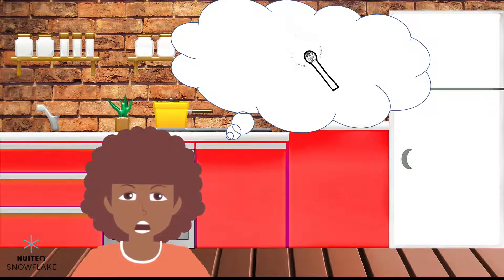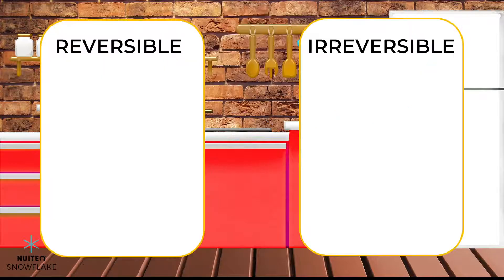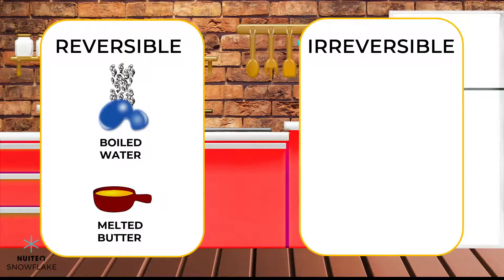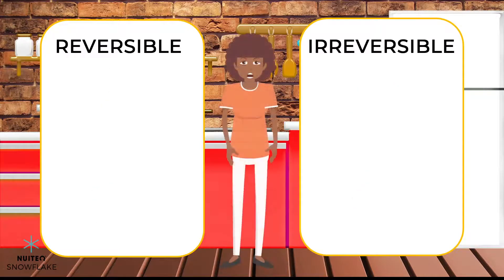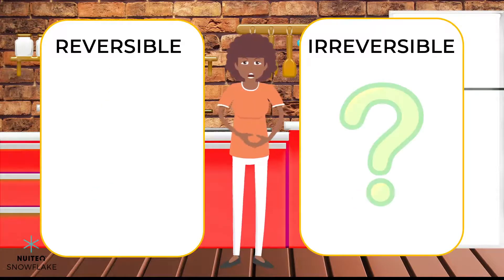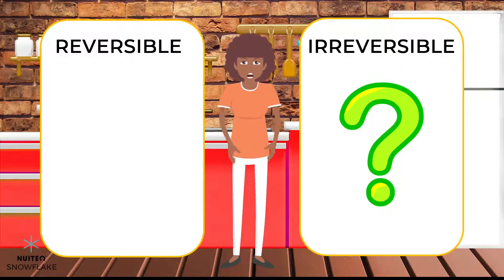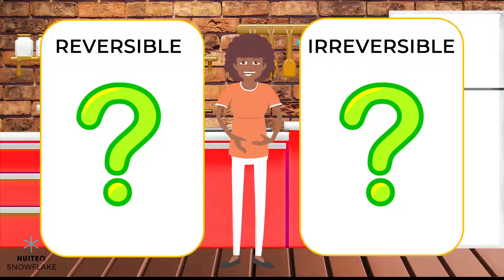Let me take the cake out of the oven. I can't wait until Owen gets here. I will tell him all about how things like water and butter can be heated and then go back to how they were, and how other things, like eggs and spaghetti, change irreversibly when they are heated. Maybe he'll have some examples of reversible and irreversible changes of his own. How about you? Can you think of things that change irreversibly when they are heated? How about if they are cooled? And can you think of things that can go back to how they were, even if they are heated or cooled?